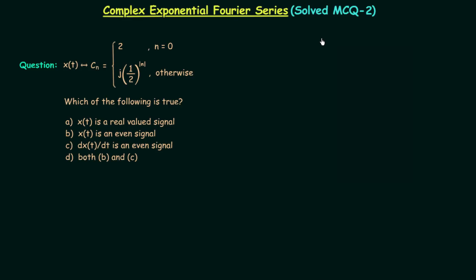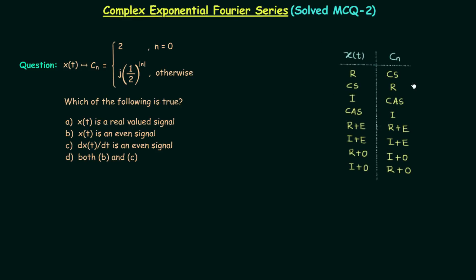In the last presentation we solved the first MCQ using XT-CN pairs and now in this presentation we are going to solve MCQ number 2. In this question XT is the signal and CN is the complex exponential Fourier coefficient of signal XT. This is how CN is defined and the question is asking which of the following is true.